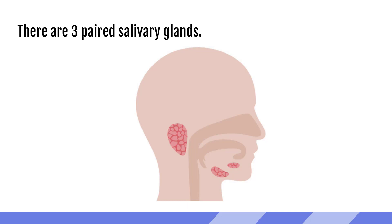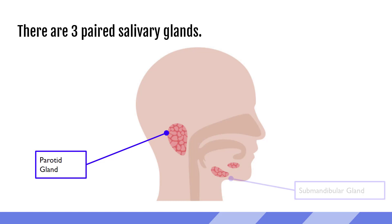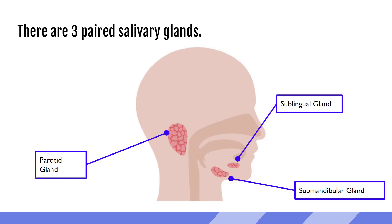There are three paired salivary glands. The parotid gland is the largest and sits just anterior to the ear, extending down the jawline and wrapping slightly under the mandible. The sternocleidomastoid muscle is posterior to the parotid gland. The submandibular gland is underneath the mandible in the submental space, a small triangular area under the chin. The sublingual glands are underneath the tongue, a little more medial than the submandibular glands.